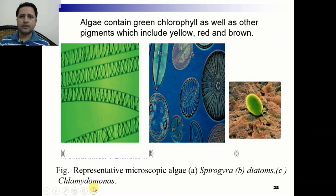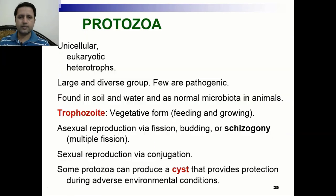Algae contain green chlorophyll as well as other pigments, which include yellow, red, and brown. Here are examples of some algae: the first example is Spirogyra, the second example is diatoms, and the third example is Chlamydomonas.